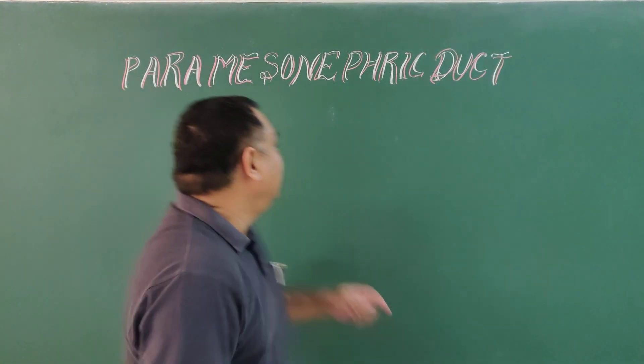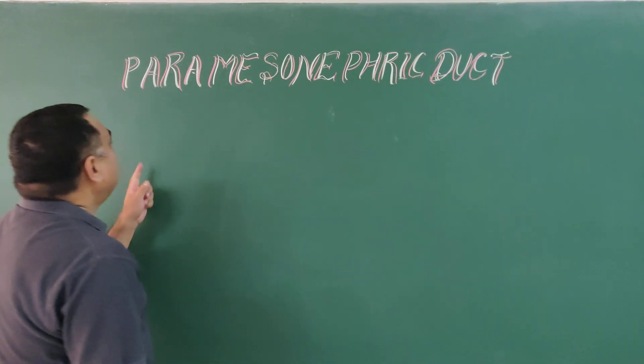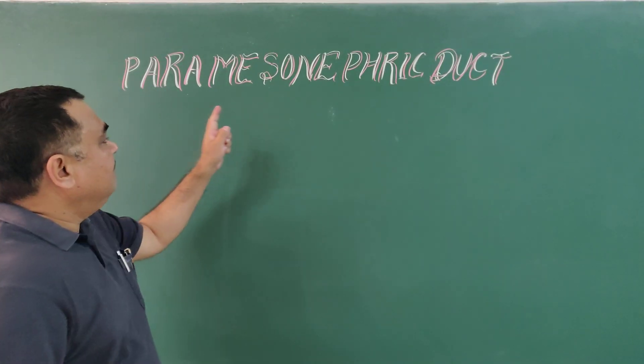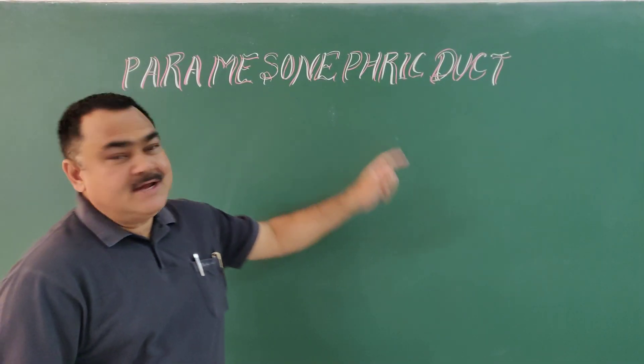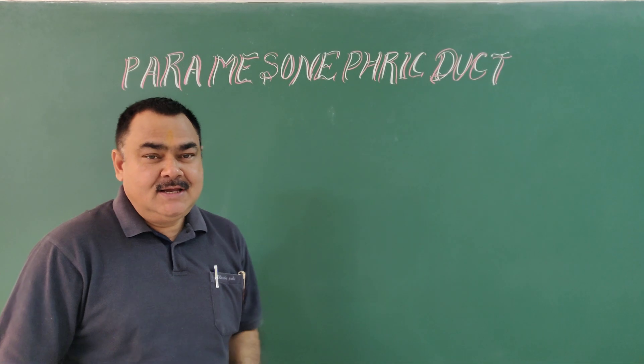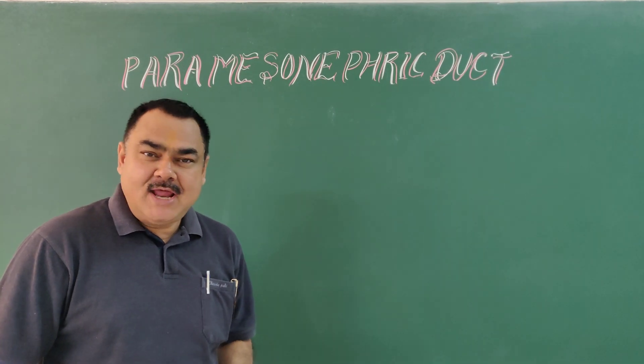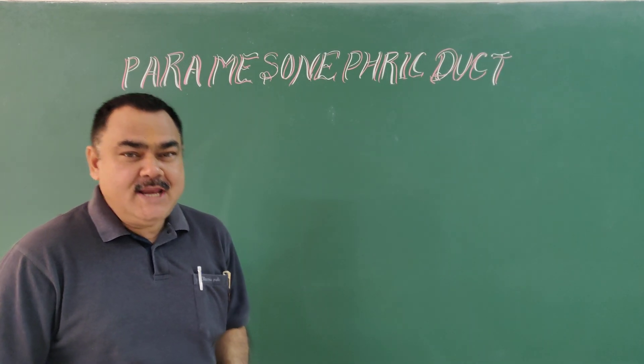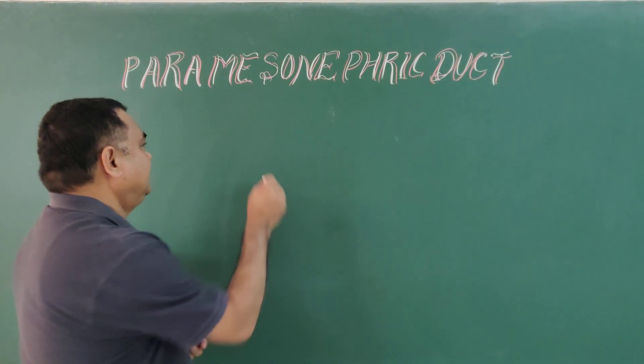Now we'll discuss about the paramesonephric duct, also known as the Müllerian duct.